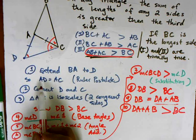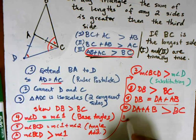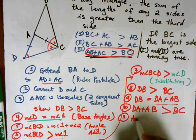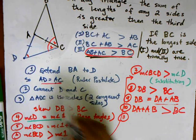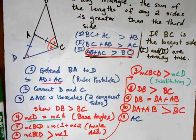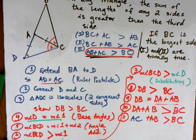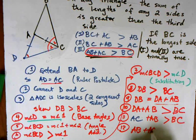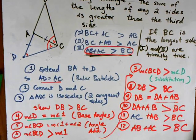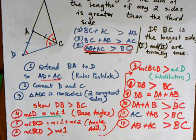From the ruler postulate, we know that AD is equal to AC. So I can substitute that in. In my final step, AC plus AB is greater than BC — and swapping these, AB plus AC is greater than BC. My reasoning is substitution, followed by the commutative property for reordering.